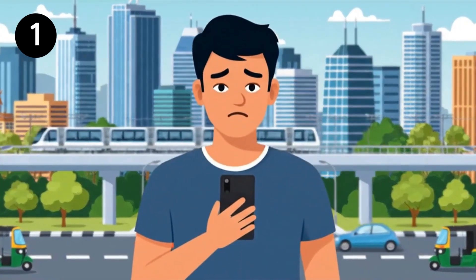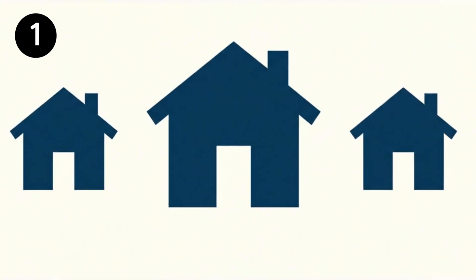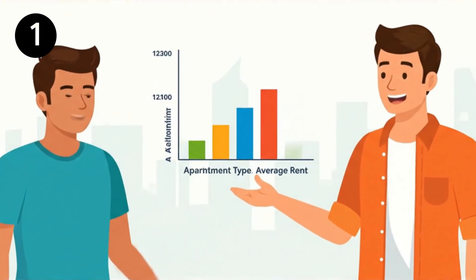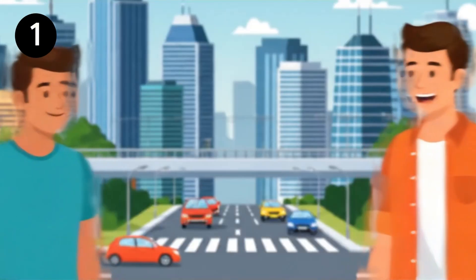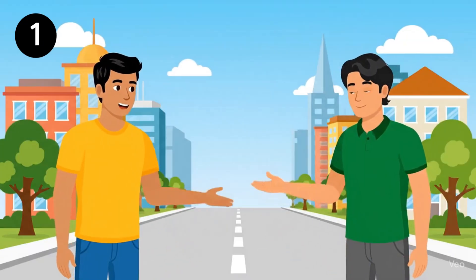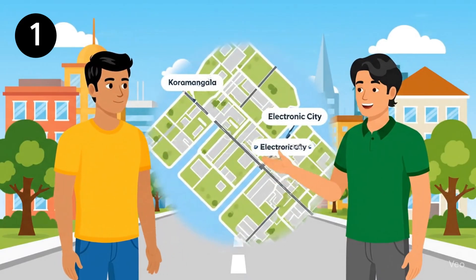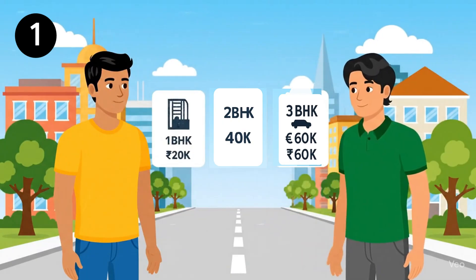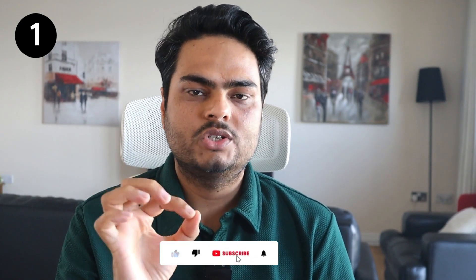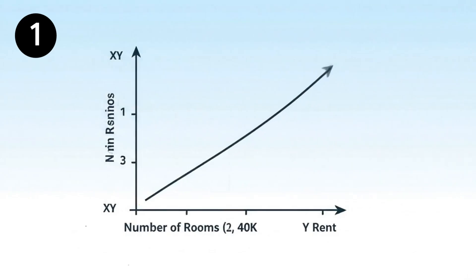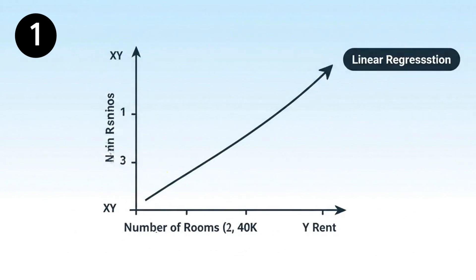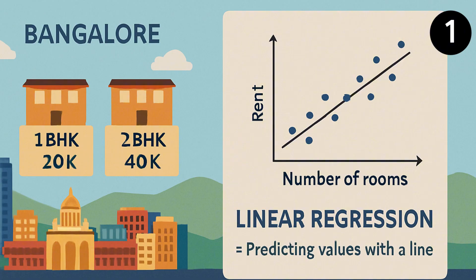Imagine you shift to a new city — let's say Bangalore — and you are looking for one-bed, two-bed, and three-bed flats. There is a friend of yours who has been staying in Bangalore for many years. You ask your friend what the price will be for renting a one-bed, two-bed, or three-bed house. Your friend thinks and tells you: in Kormangla, one bed costs 20K, two bed costs 40K, three bed costs 60K; in Electronic City, one bed costs X, two bed costs Y, three bed costs Z. What your friend is doing is fitting a line — on one axis there is rent, on the other axis there is number of rooms. This is nothing but linear regression, where you try to estimate something based on an independent variable. The independent variable is number of rooms, and the target variable is the rent.